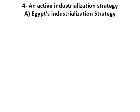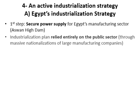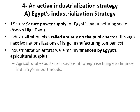The fourth point is an active industrialization strategy. Egypt's industrialization strategy first step was to secure power supply for the manufacturing sector through building of the Aswan High Dam. Industrialization plans relied on the public sector through massive nationalizations of large manufacturing companies. Industrialization efforts were mainly financed by Egypt's agricultural surplus, using agricultural exports as a source of foreign exchange to finance industrial import needs.